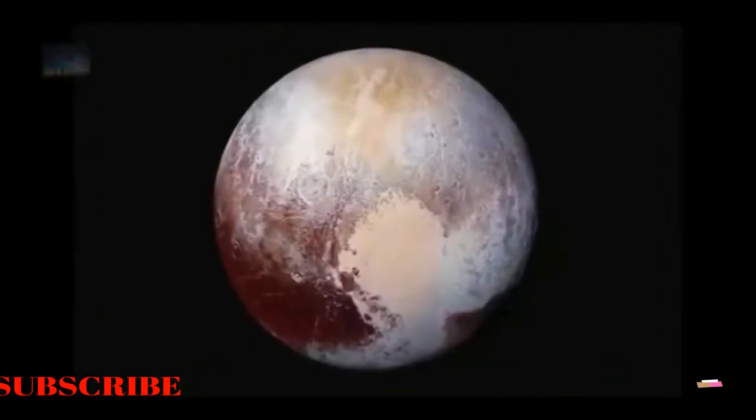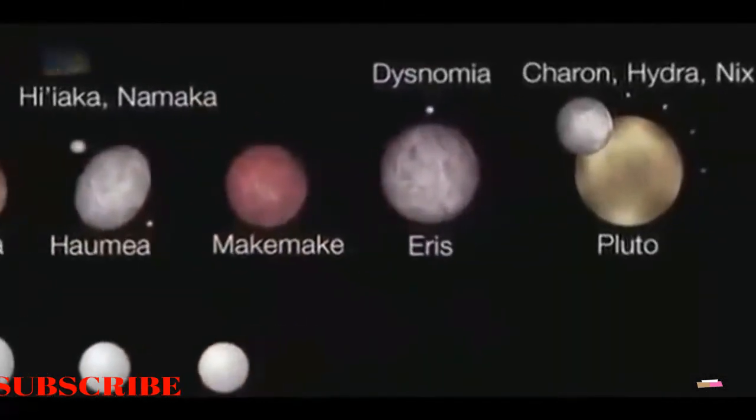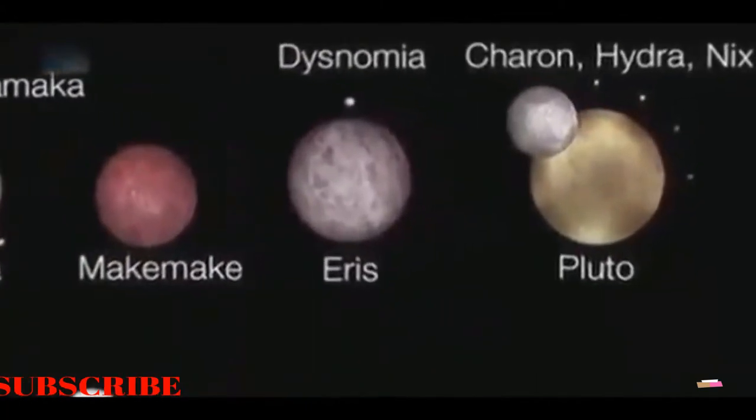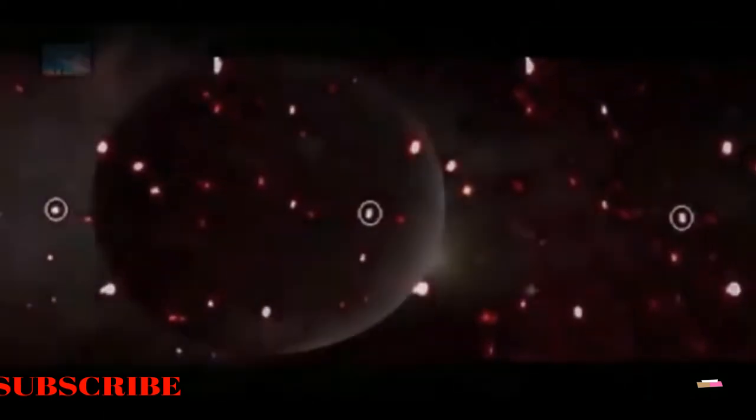But in 1978, Pluto was conclusively determined to be too small for its gravity to affect the giant planets, resulting in a brief search for a tenth planet. The search was largely abandoned in the early 1990s.